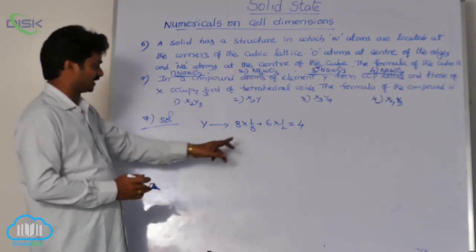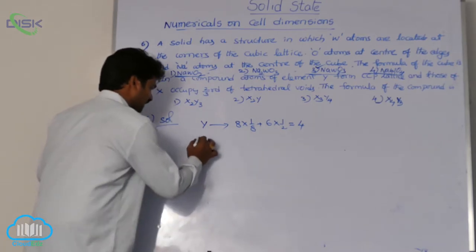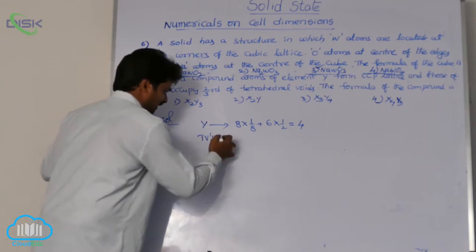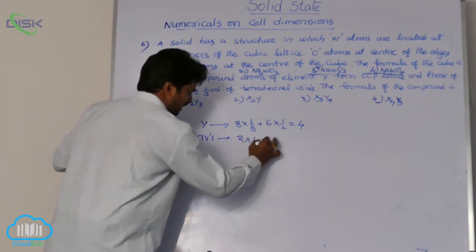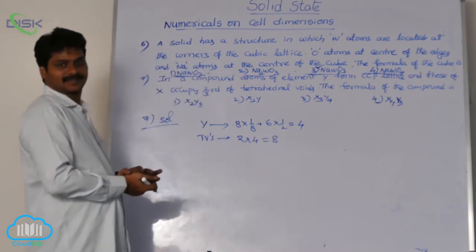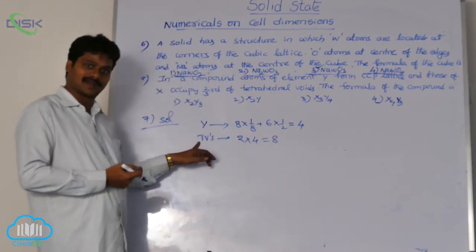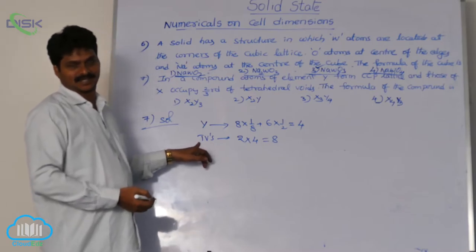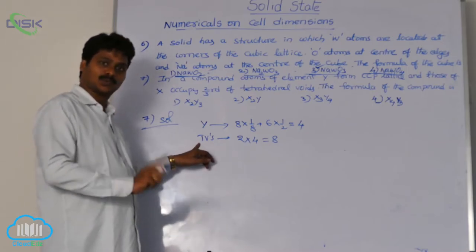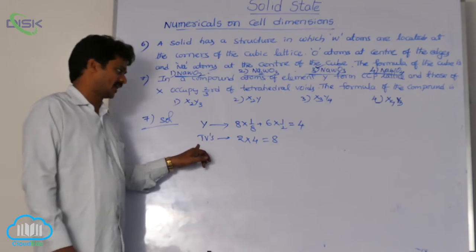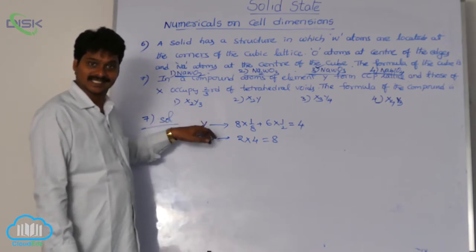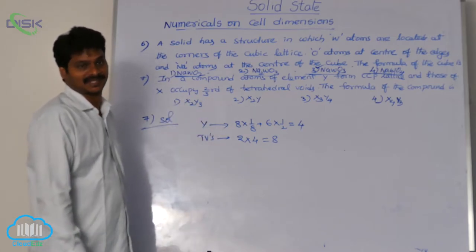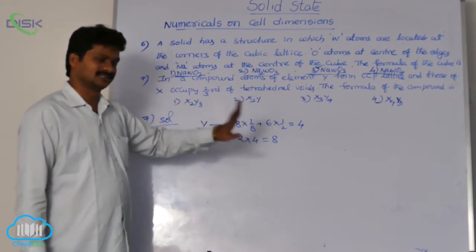In FCC, the number of tetrahedral voids is 2×4, that means 8 tetrahedral voids. The formula is: number of tetrahedral voids equals 2 times the number of effective atoms. Here we consider the effective atoms of Y because it is the FCC-forming atom. So tetrahedral voids equals 8.